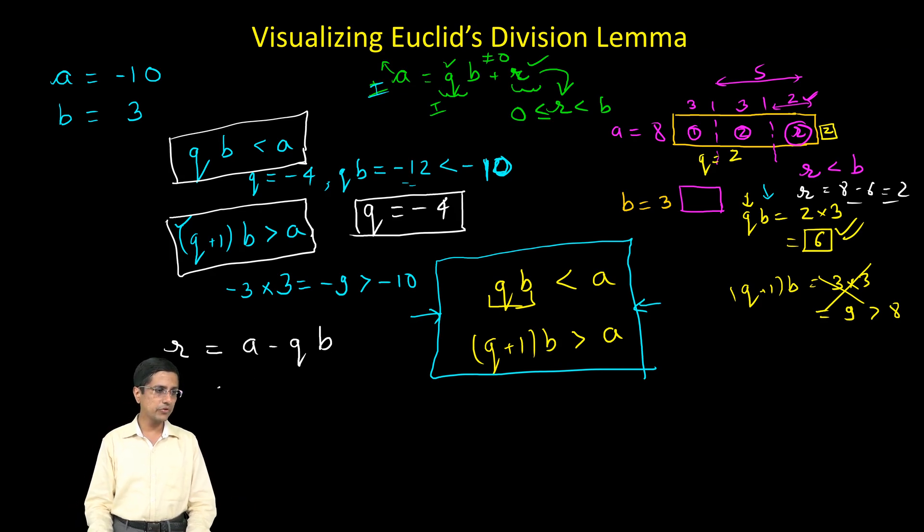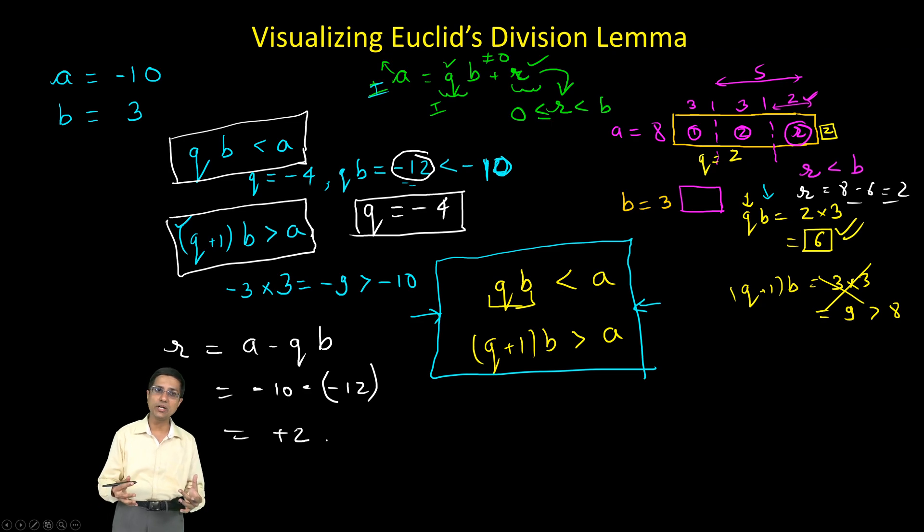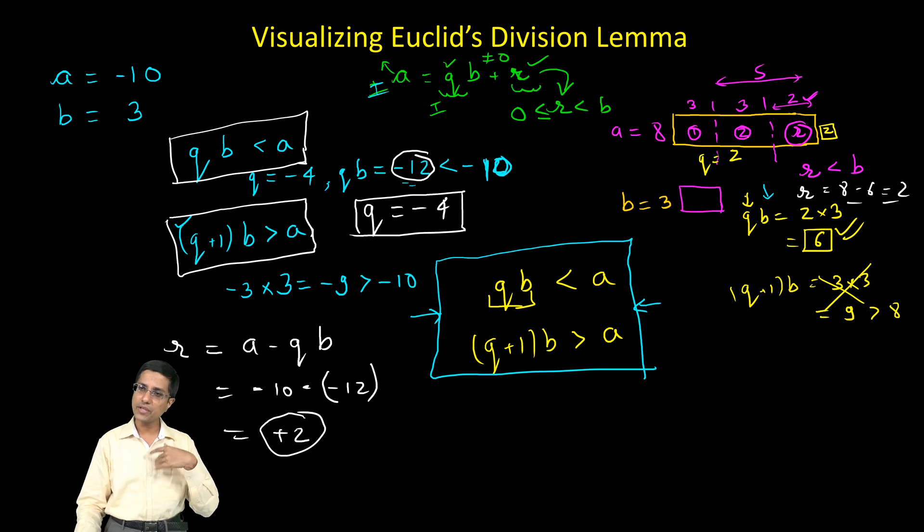That is the case here also. So here A is of course about minus 10. Minus QB is minus will remain here and QB is of course negative, we said that it is minus 12. So this comes out to be minus 12 and so our answer becomes minus 10 plus 12 which is equal to plus 2. So like we said that even in case of negative numbers we can arrive at a positive remainder if we choose the value of Q properly.